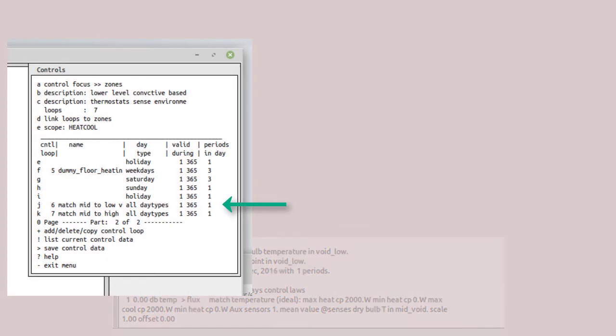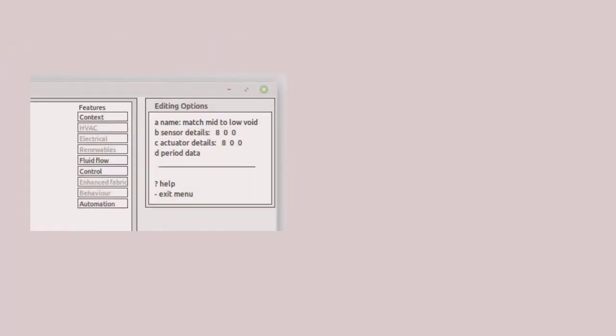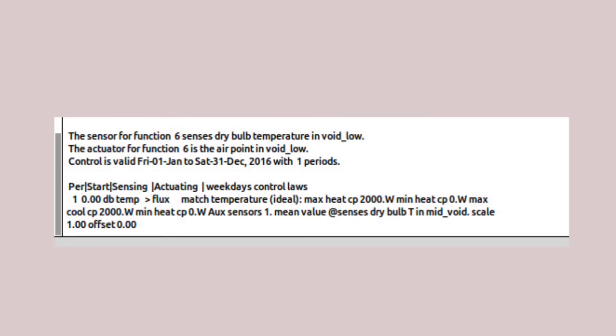In the control definitions, we need control loops for the lower ceiling void and one for the upper ceiling void. They can use a very simple schedule that needs to apply all days at all times. The attributes we need to give it are a heating and cooling capacity to enable the matching, and a pointer to which zone to match.